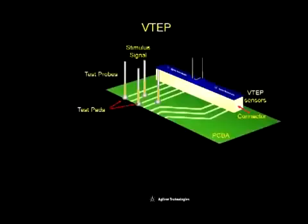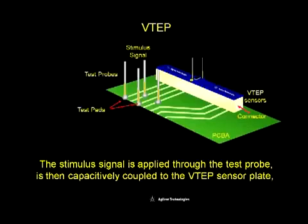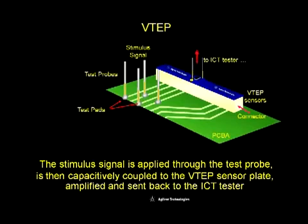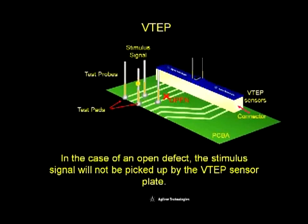VTAP technology relies on physical test access to provide input stimulus to the device under test. The input stimulus is applied through the test probe, is then capacitively coupled to the VTAP sensor plate, and amplified by the VTAP amplifier board before sending back to the ICT tester for analysis. In the case of an open defect, the stimulus signal will not be picked up by the VTAP sensor plate.